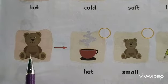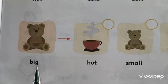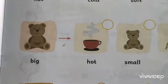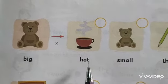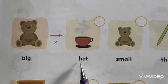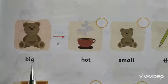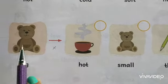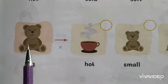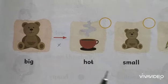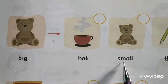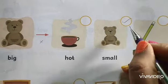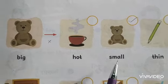Go to the second picture. One teddy is here and it indicates big — B-I-G. So put the opposite sign here. What is the opposite of big? The first picture shows a hot cup of tea — H-O-T. Is big opposite of hot? No. The same teddy appears again but in a bigger size, and the other is small — S-M-A-L-L. So the opposite of big is small. That is correct.